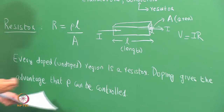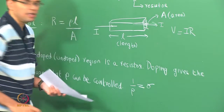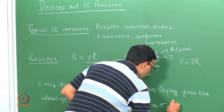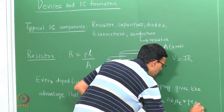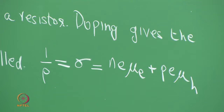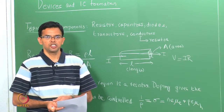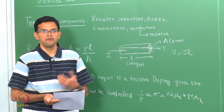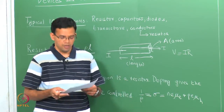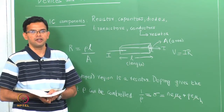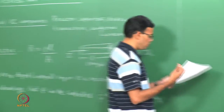We have seen that 1 over rho is nothing but the conductivity sigma, which is n·e·mu_e plus p·e·mu_h. If you are not doping, then n equals p equals n_i, which is your intrinsic carrier concentration. When you dope with either electrons or holes, one of these terms dominates. We can look at the different types of resistors and how they are fabricated. The simplest is a doped resistor.